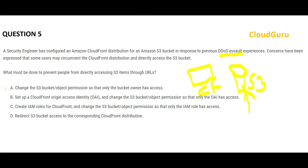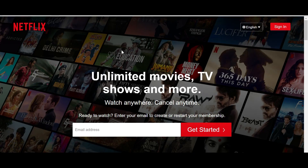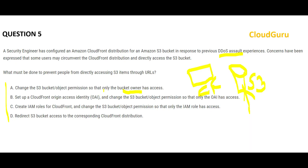So which option can we use to prevent that? The first option says only the bucket owner will have access — but what about end users? For example, Netflix uses a similar architecture with CloudFront for distribution and video files on S3. If only the owner had access, you as a viewer couldn't watch videos on Netflix. Hence option A is wrong.